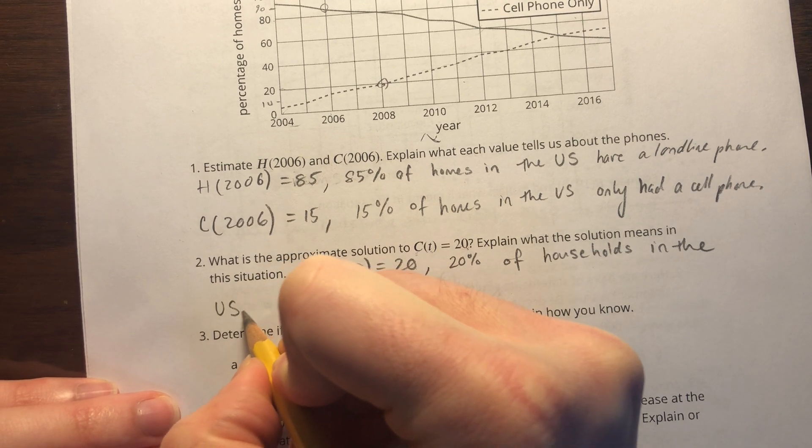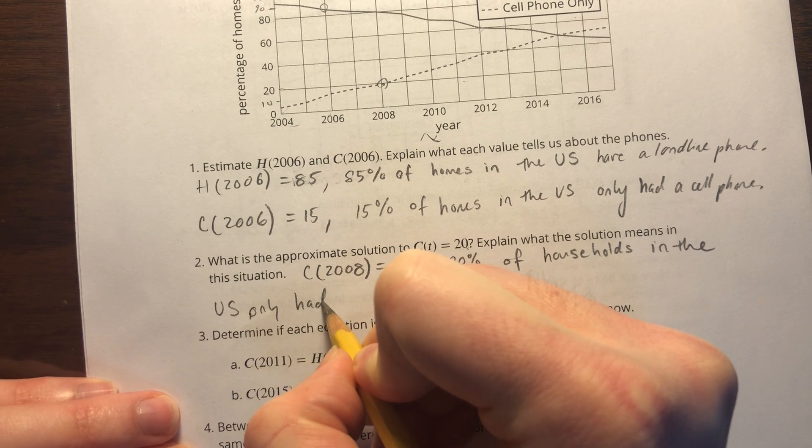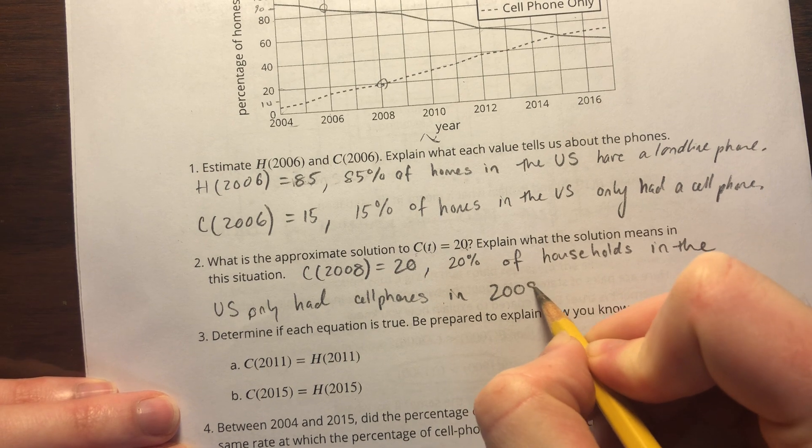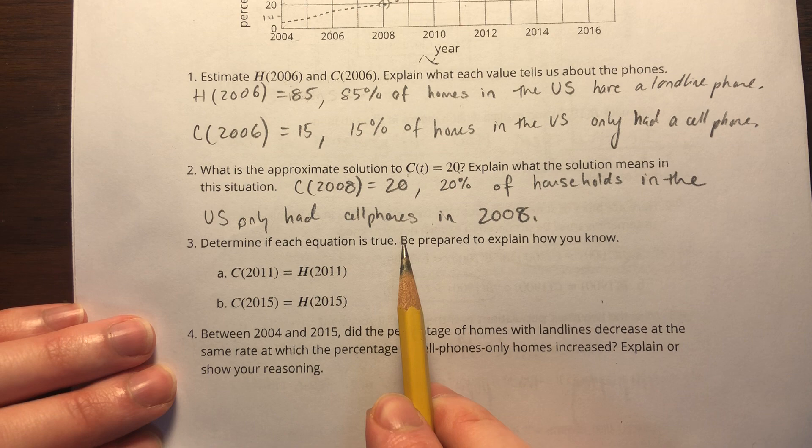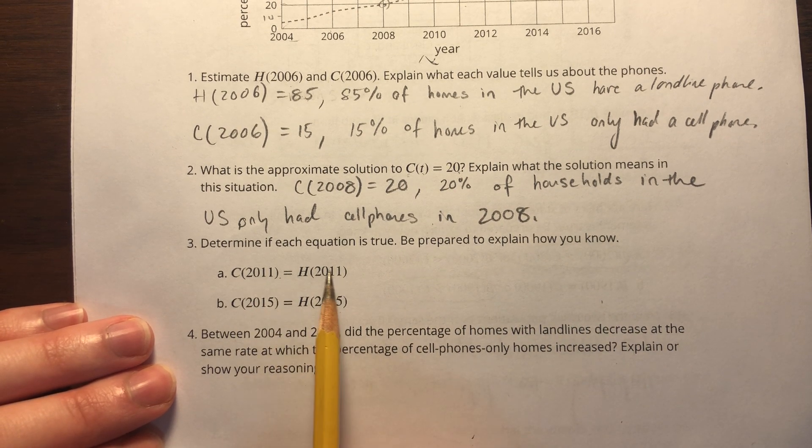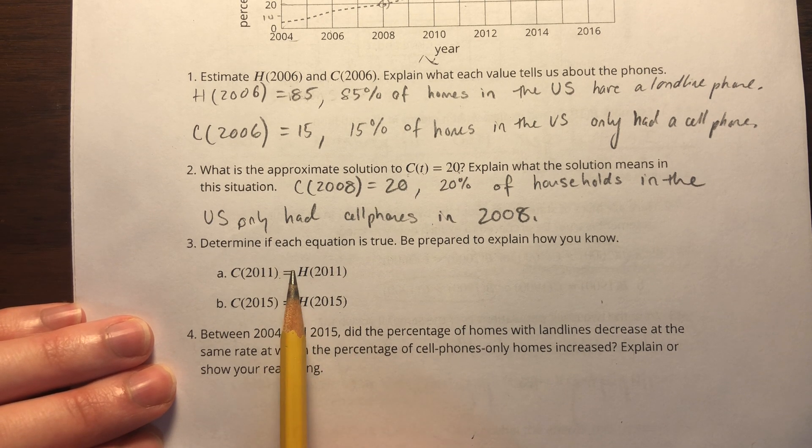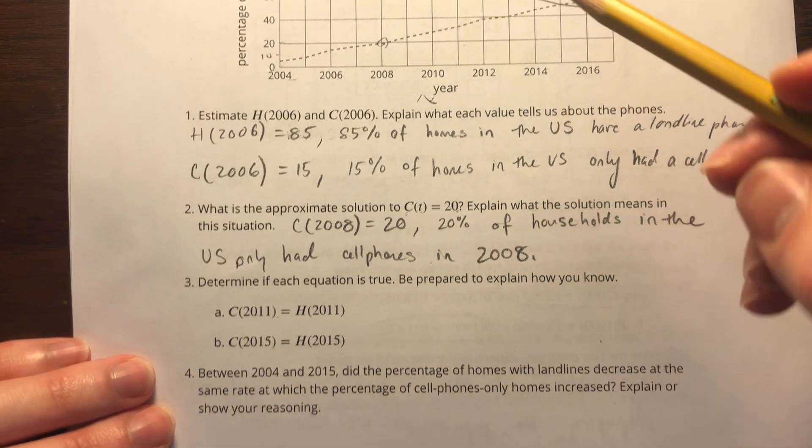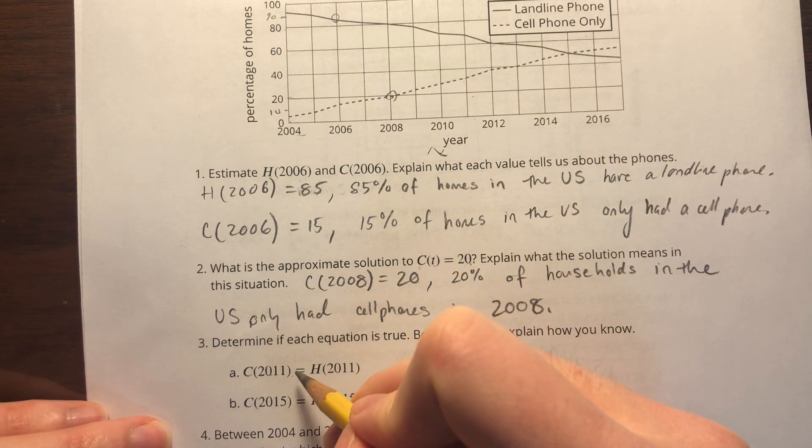Determine if each equation is true. Be prepared to explain how you know. We've got two different functions being set equal to each other, that means we are looking for an intersection. They're saying there's an intersection at 2011. If I go to 2011, I can see that these graphs are rather far apart, so that certainly is not true. No intersection at t = 2011.